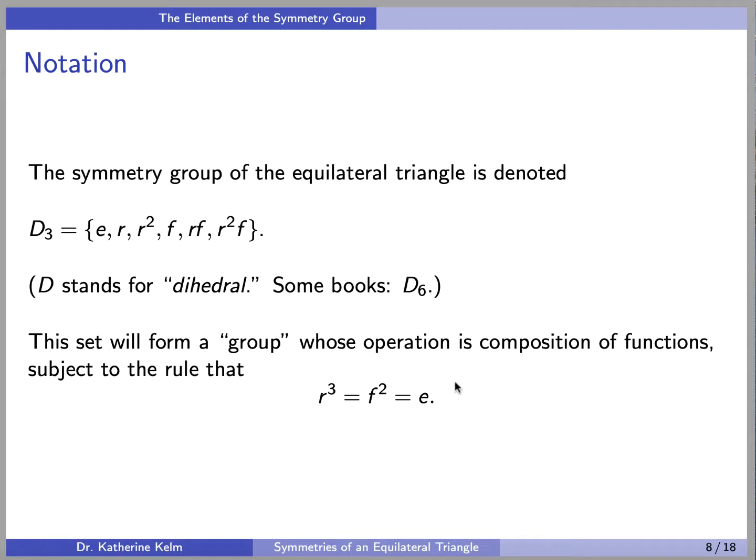And in point of fact, since RF is also a flip, you can check that RF squared, which would be RF RF, is also E. And you can check that R squared F, when you square that, you also get E.